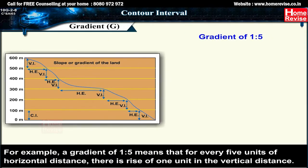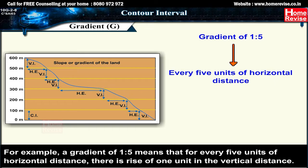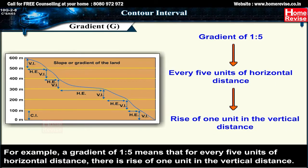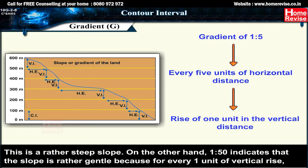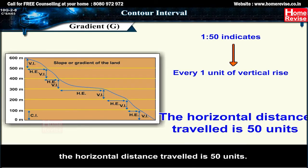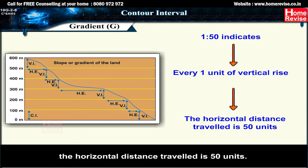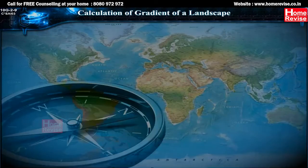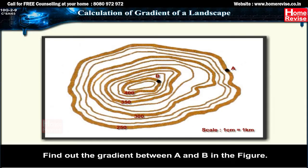For example, a gradient of 1:5 means that for every five units of horizontal distance there is a rise of one unit in vertical distance — this is a rather steep slope. On the other hand, 1:50 indicates a rather gentle slope, because for every one unit of vertical rise the horizontal distance traveled is 50 units. To calculate gradient, find the gradient between points A and B in the figure.